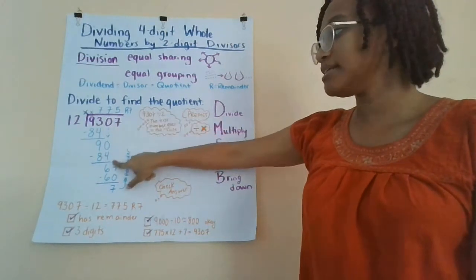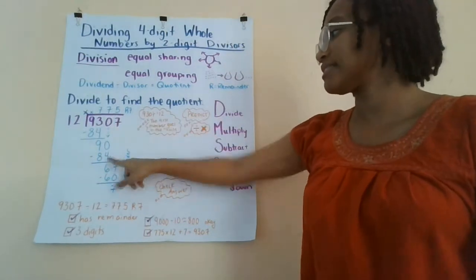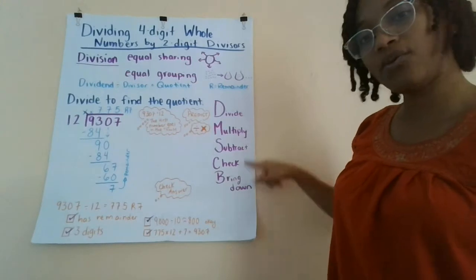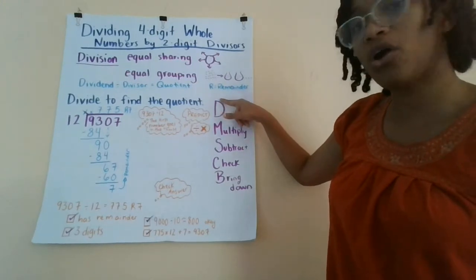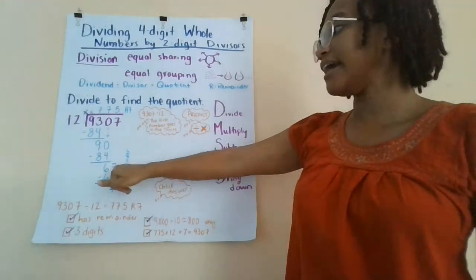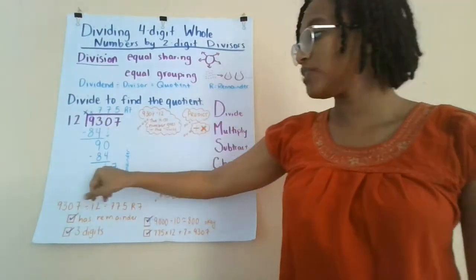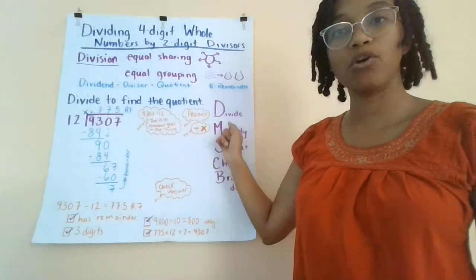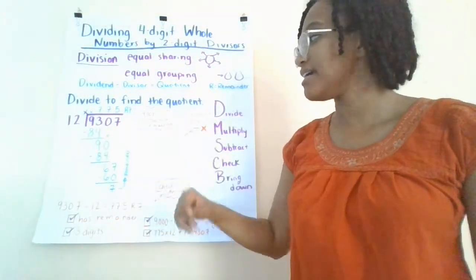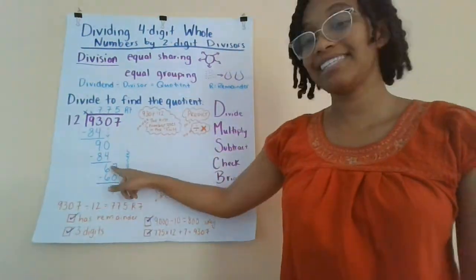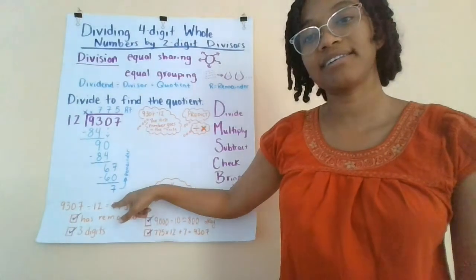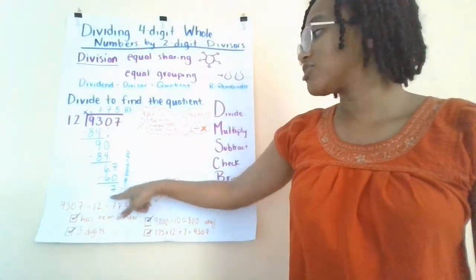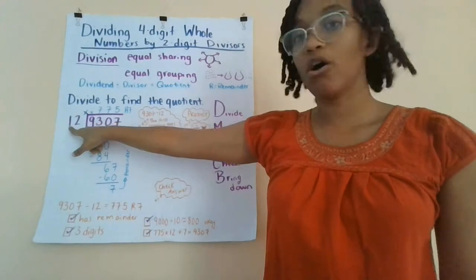Finally, it's time to bring down that 7 for this number 67. And since we've brought down, we start all over again. Let's divide. How many times does 12 fit into 67? It fits in 5 times. And now I multiply. 5 times 12 is 60. Ready to subtract? 67 minus 60 is 7.